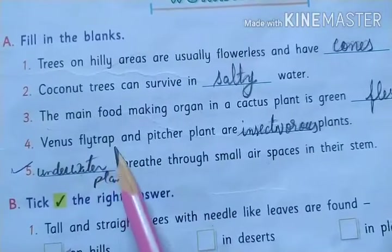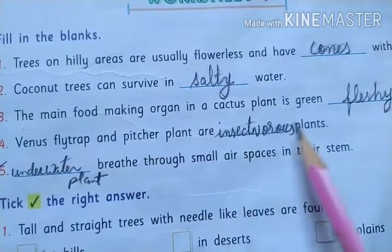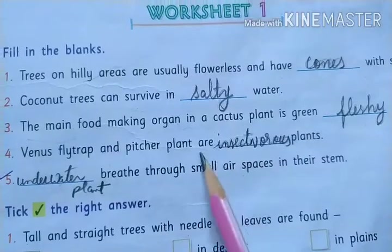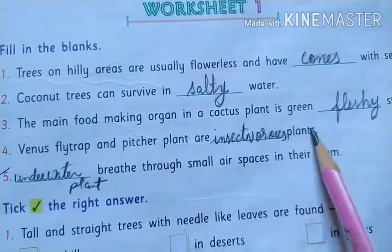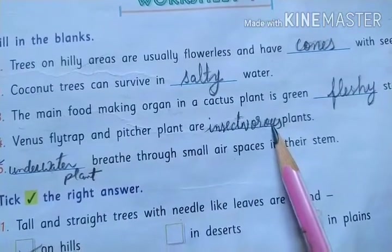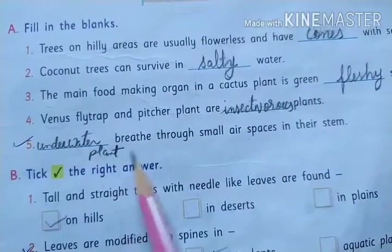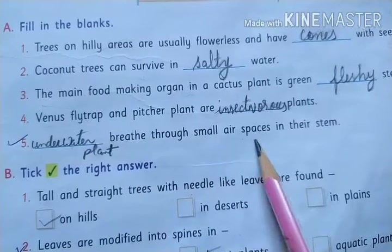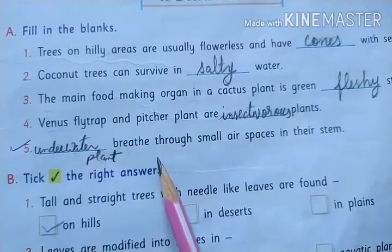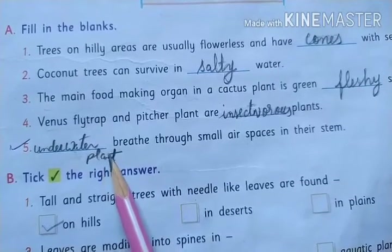Venus flytrap and pitcher plant are what kind of plant? The answer is insectivorous plant — these are examples of insectivorous plants. The next blank: dash breathe through small air spaces in their stem. The answer is underwater plants.